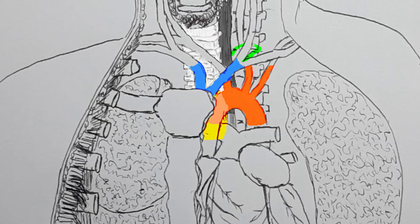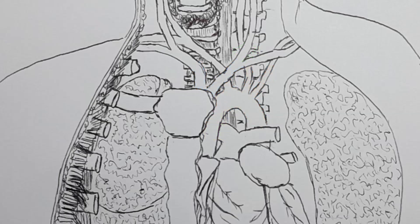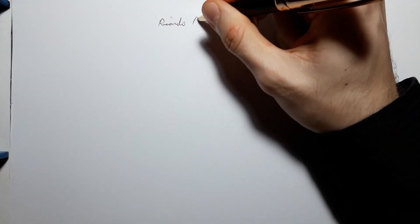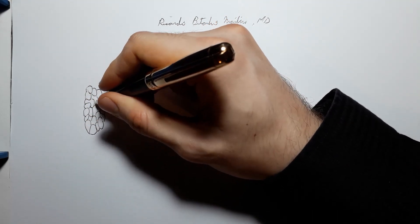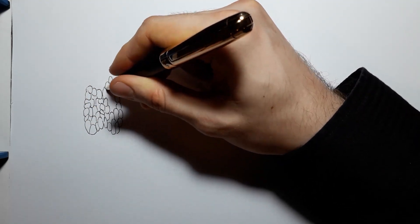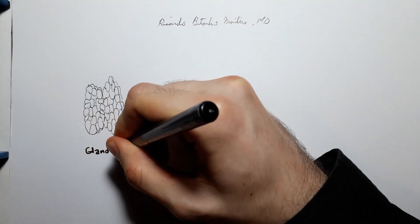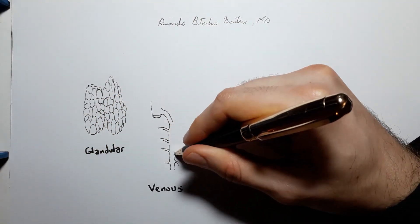Either fortunately or unfortunately, depending on how you want to look at it, because there are so many structures on different planes in the superior mediastinum, it becomes important to know the relationship between them — meaning what's in front of which. If you open someone's chest and start digging, what are you going to find first and what are you going to find last? From anterior to posterior, you will first meet the glandular plane, where you will find the thymus in a child, or just fat in an adult.